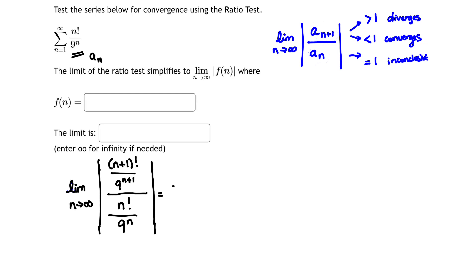Now I want to do a little bit of simplification here. So I'm going to take the limit as n goes to infinity. And if you permit, I'm going to take my first numerator, n plus 1 factorial over 9 to the n plus 1, and I'm going to rewrite it and expand it a little bit.